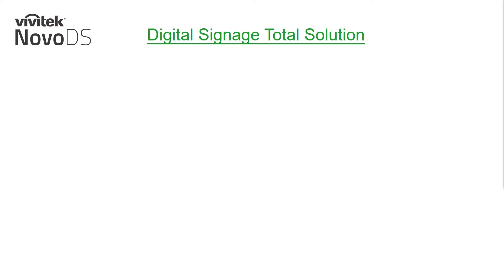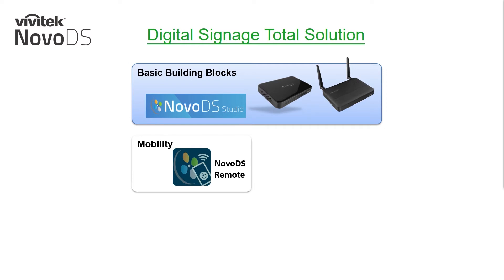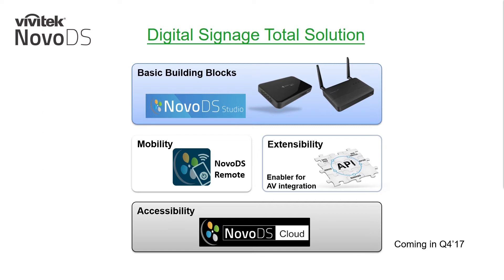To get a better understanding of our complete solution, let's go over the basic building blocks, which are the Nova DS and Nova DS 4K device and the Nova DS Studio software. The software is both Mac and PC compatible and functions as your content management system. For mobile control, we have our Nova DS remote — a free Android or iOS remote application that allows you to manage your networked Nova DS's without the need of a laptop. For extensibility, we have our API released for custom API integration. And soon to come in quarter four, we'll be releasing our Nova DS cloud service, allowing you to manage your devices over the internet. With these four components, we make it simple to create your content, deliver your message, and truly capture your audience.